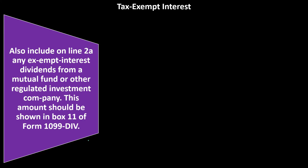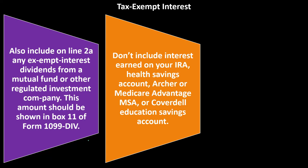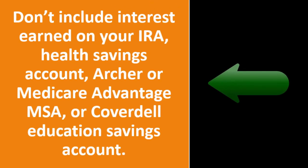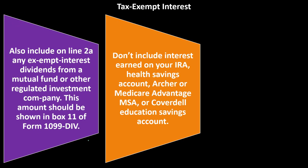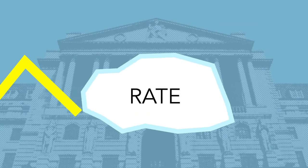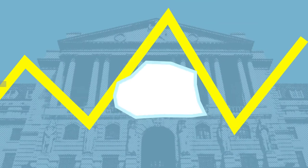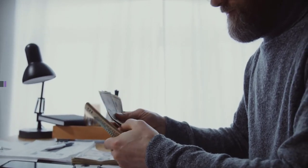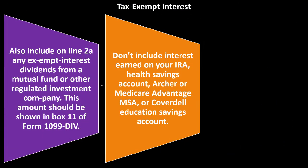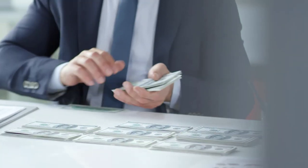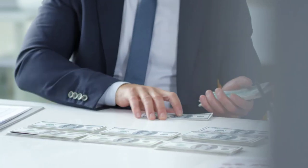Box 11 is a bit more unusual, but you can check the instructions for any unfamiliar boxes. Do not include interest earned on your IRA, health savings account, Archer MSA, Medicare Advantage MSA, or Coverdell education savings account. These accounts allow you to accrue gains like interest without reporting them as you earn them — you typically report them when you withdraw the money.